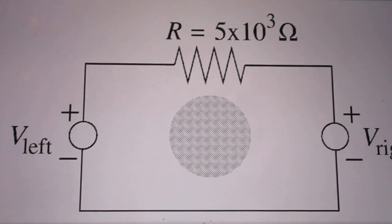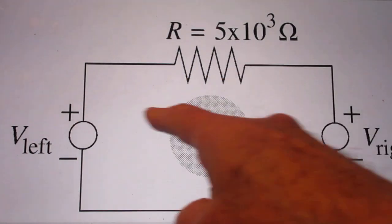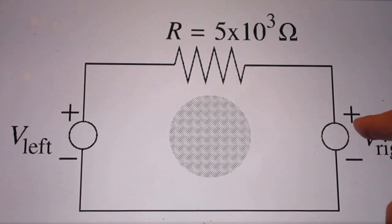A very simple circuit. Two voltmeters, they have the same internal resistance of 10,000 ohms and here a resistor 5,000 ohms. Straightforward, you would think.